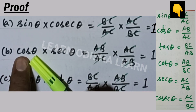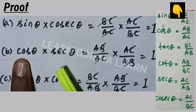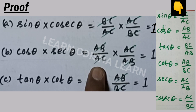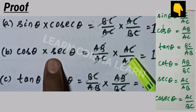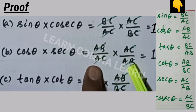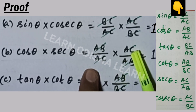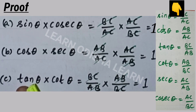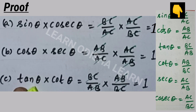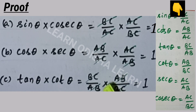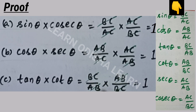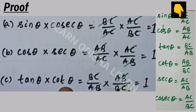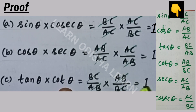For the third relation: tan theta multiplied by cot theta. Tan theta is BC by AB and cot theta is AB by BC. BC and BC cancel, AB and AB cancel, giving 1. This proves all three inverse relations.